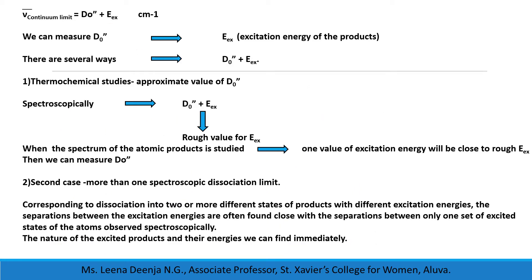We can measure D₀ double-dash if we know the excitation energy E_EX. The first method is thermochemical studies, which often lead to an approximate value of D₀ double-dash. From spectroscopic studies, we can calculate the total value of D₀ double-dash plus E_EX. Substituting the approximate value of D₀ double-dash gives a rough value of E_EX. When the spectrum of atomic products is studied, one of the excitation energies will be close to this rough value — that will be the actual value of E_EX — and substituting it gives the precise D₀ double-dash.